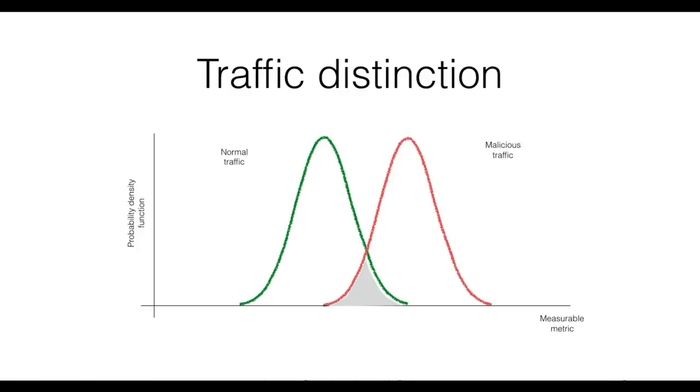This example tells us that the intrusion detection process will make errors, and that we might not be able to avoid it. Since we have established that an IDS will most likely make some detection errors, it is then important that we are able to quantify how well an IDS performs.